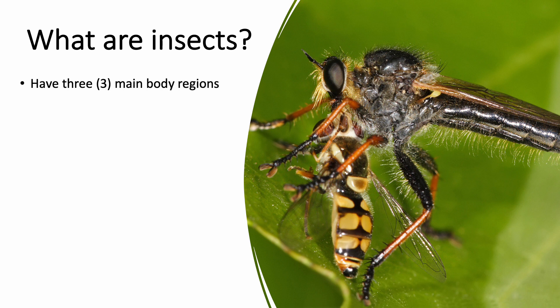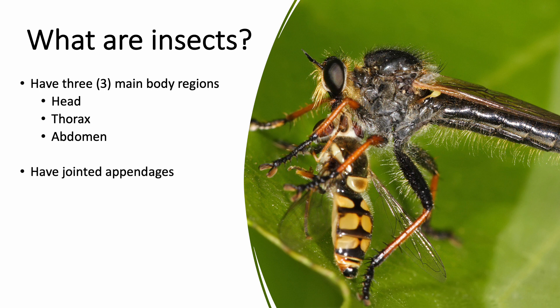Insects are made of three main body regions: the head, the thorax, and the abdomen. They also have jointed appendages, meaning their legs have joints just like ours. Insects have an exoskeleton, which is in contrast to humans who have an internal skeleton. All insects have six legs — sometimes finding all six can be tricky depending on the arrangement, but they will always have six legs.